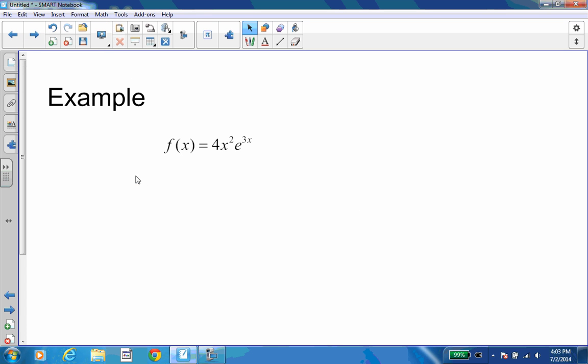Let's look at the example. Here we have four x squared e to the three x. To take the derivative, we need to identify what's our u and what's our v. I'm going to say that our u is four x squared and our v is e to the three x.